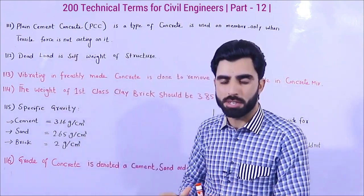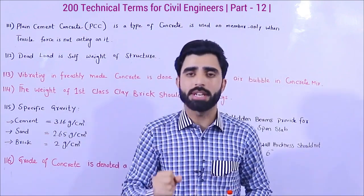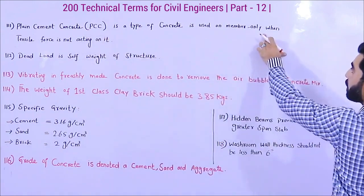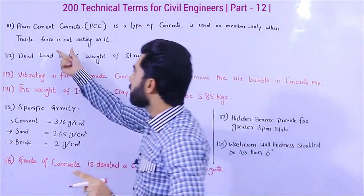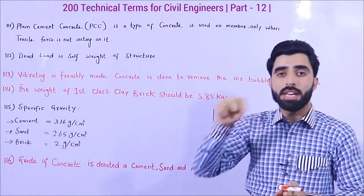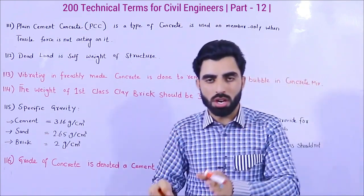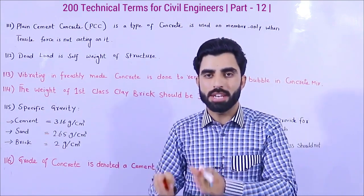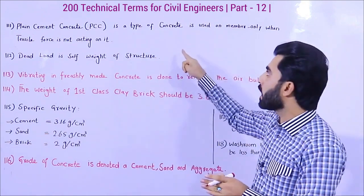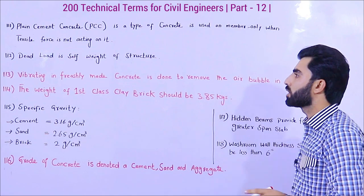Term number 111 is PCC — Plain Cement Concrete. As I told you before in many videos, concrete is strong in compression but weak in tension. Plain cement concrete is a type of concrete used only in members or structures where tensile force is not acting. So when tensile force is acting on any concrete structure, do not use PCC. PCC should not be allowed or used in that structure.